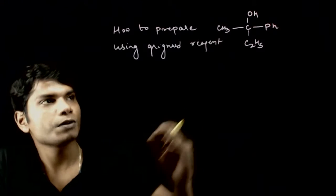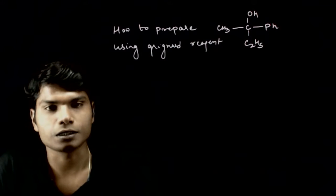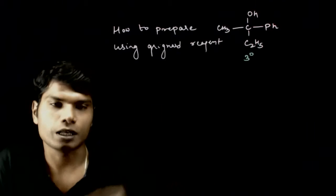Welcome back. Especially when we get alcohol using Grignard reagent, three groups are called. This is our tertiary alcohol.